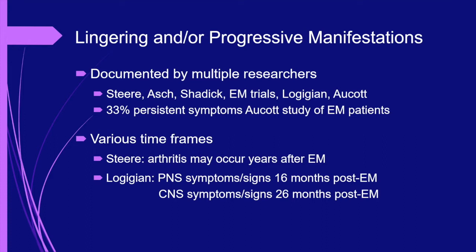While arthritis typically occurs within months of the patient being treated for the EM rash, Steer and colleagues found it could come on years later. Logigian found that peripheral nervous system symptoms developed an average of 16 months after treatment of an EM, and CNS symptoms at 26 months post-EM.